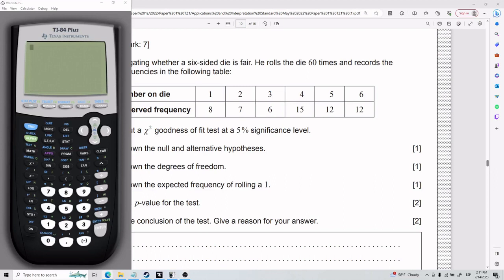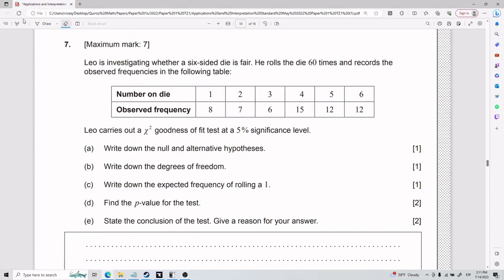Alright, and now for the seventh one. We have that Leo is investigating whether a six-sided die is fair. He rolls the die 60 times and records the observed frequencies in the following table. So here we have a number on the die and the observed frequency.